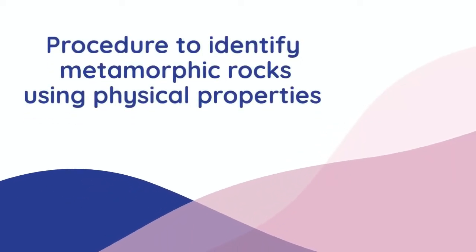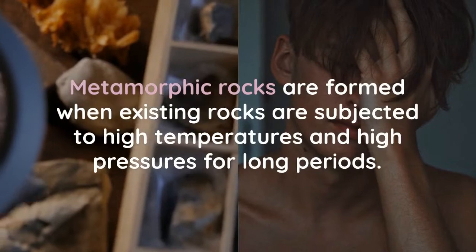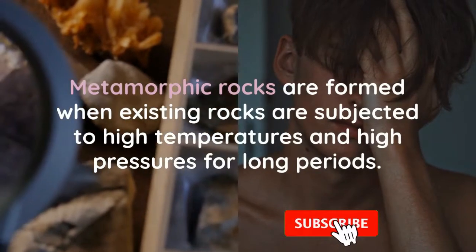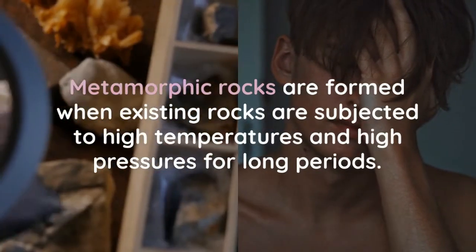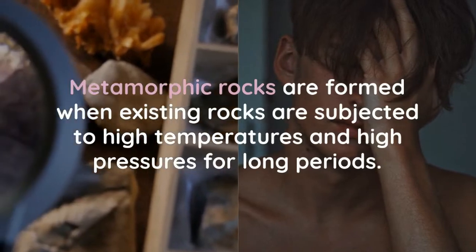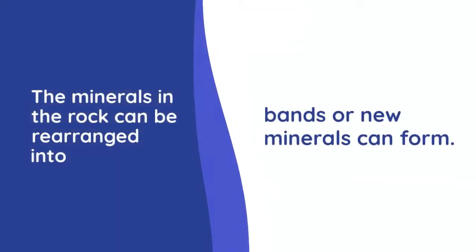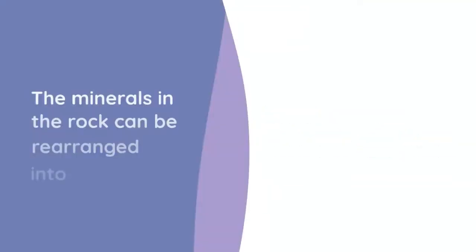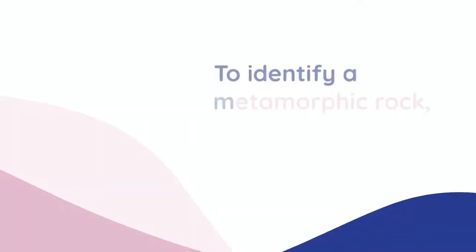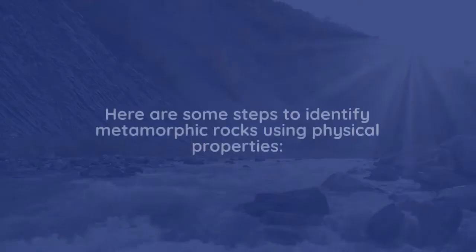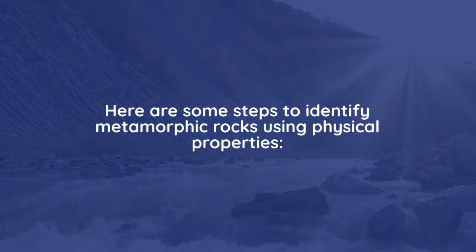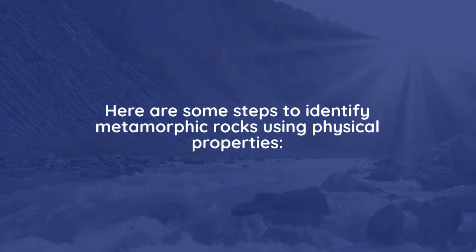Procedure to identify metamorphic rocks using physical properties. Metamorphic rocks are formed when existing rocks are subjected to high temperatures and high pressures for long periods. The minerals in the rock can be rearranged into bands, or new minerals can form. To identify a metamorphic rock, you can use its physical properties. Here are some steps to identify metamorphic rocks using physical properties.